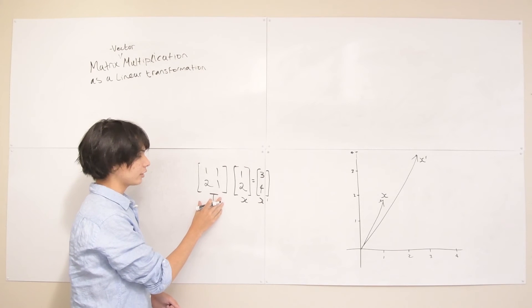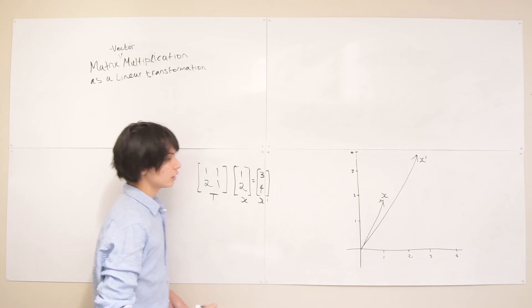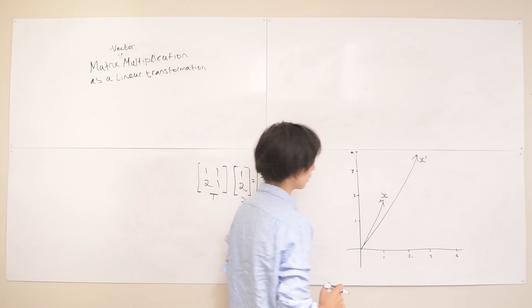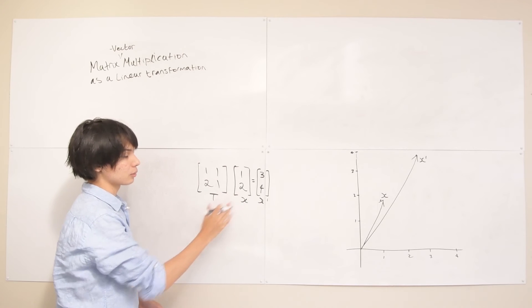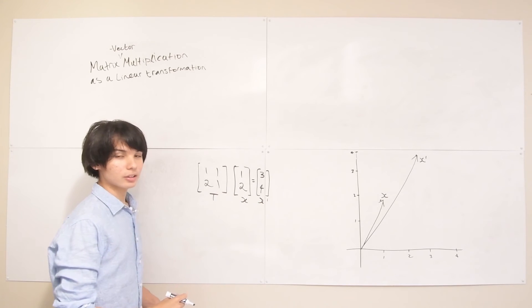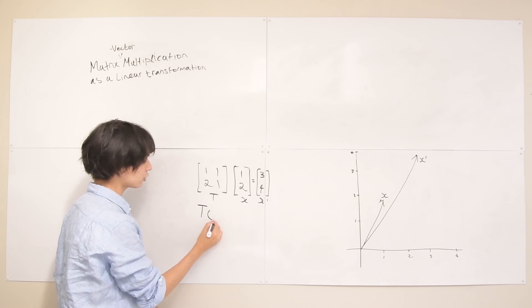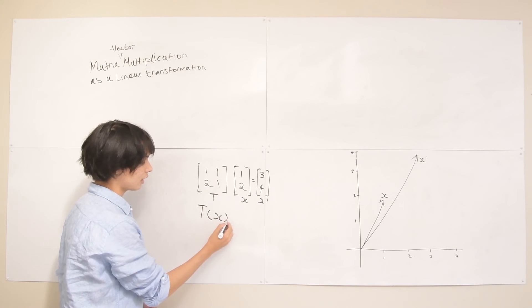You can see how this transformation matrix T kind of encodes the transformation from X to X prime. You can kind of see this matrix not just as a matrix-vector multiplication that gives you this resulting vector, but you can think of this matrix T as being a function that takes in vectors X and then spits out some vectors X prime.